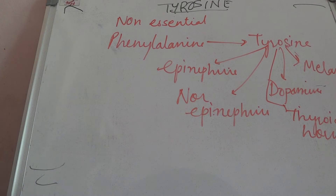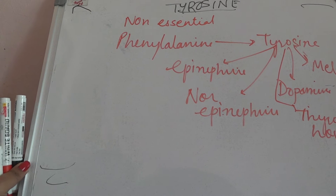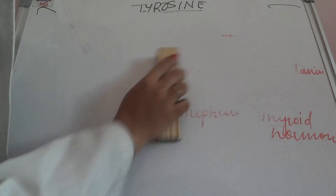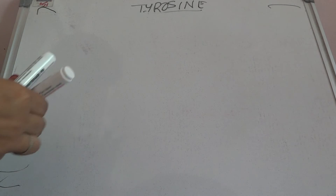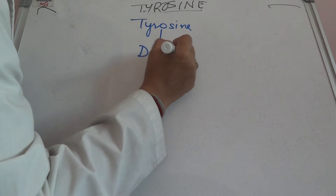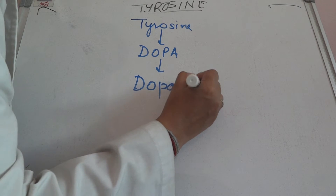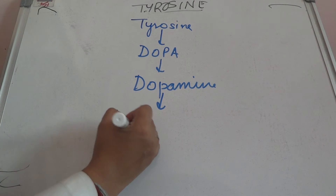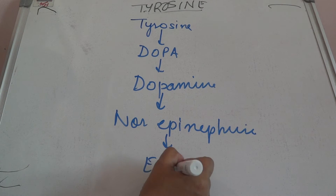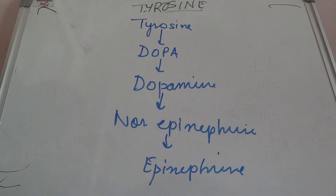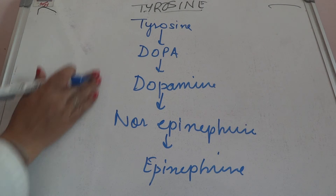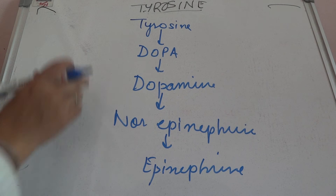Tyrosine becomes more important because it leads to the formation of epinephrine, norepinephrine, dopamine, thyroid hormones, and melanin. Coming to the cycle of tyrosine: tyrosine will form DOPA, DOPA will form dopamine, dopamine will form norepinephrine, and norepinephrine forms epinephrine. First we will see the cycle — then it becomes easy to remember. The intermediates and final product epinephrine should be remembered.